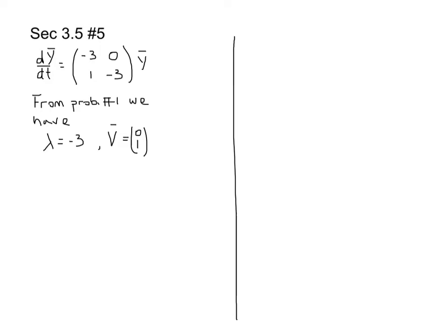This is problem number 5 from section 3.5. It is based on problem number 1 that we did previously, where we found for this matrix we had a repeated eigenvalue of minus 3 and its eigenvector of 0, 0, 1.